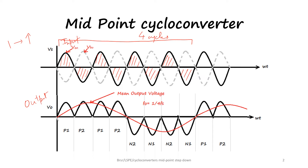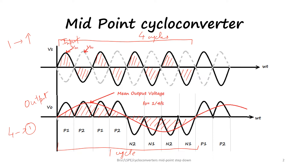We have seen four cycles of input supply, and the output we would get will be like the one shown here. You can see the red line — for two cycles of the input voltage, we have got just one cycle of output frequency. And for the next two cycles we have got one half cycle. So for four cycles of the input supply we have got just one cycle of the output supply. The red line shows the output frequency, but the actual output will be in the form of cycles, and the average of that is taken as the actual output.